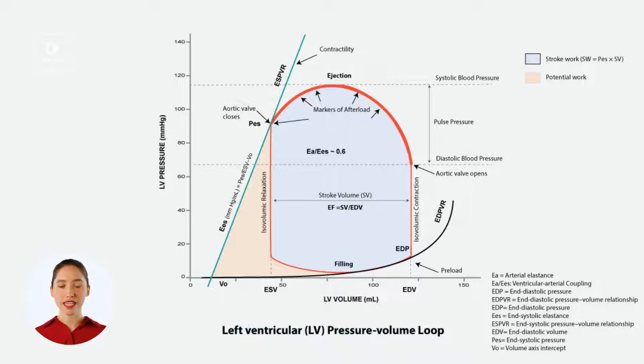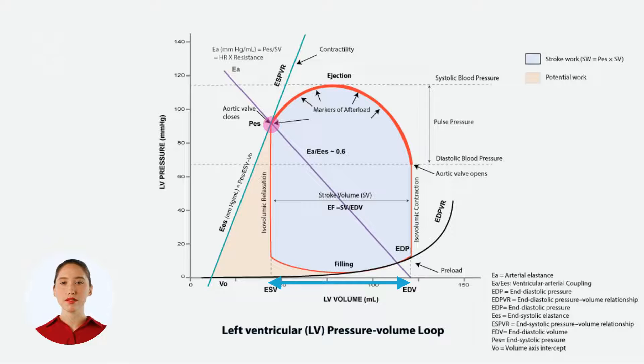We just defined arterial elastance as the end-systolic pressure divided by the stroke volume. So, this is the point of end-systolic pressure. Then, we know that the stroke volume is the difference between end-diastolic volume and end-systolic volume, right? Thus, to find arterial elastance, we use the slope from the end-systolic point to the end-diastolic volume. As simple as that!